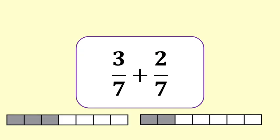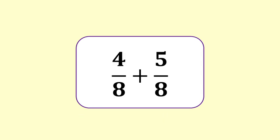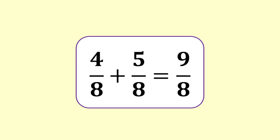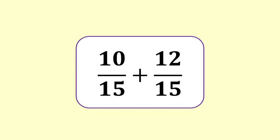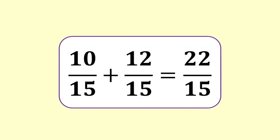You can see it represented here with a bar model: 3 sevenths plus 2 sevenths equals 5 sevenths. Next: 4 eighths plus 5 eighths. We add the numerators and use the same denominator for the answer: 4 eighths plus 5 eighths equals 9 eighths. Then: 10 fifteenths plus 12 fifteenths. We add the numerators and use the same denominator: 10 fifteenths plus 12 fifteenths equals 22 fifteenths.